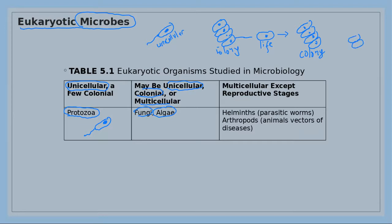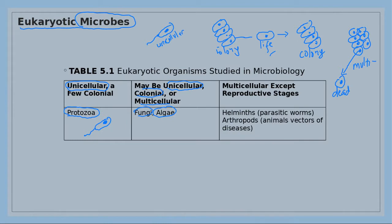Colonial organisms can live by themselves. For multi-cellular organisms — like humans, animals, or plants — they consist of millions of cells. If one cell is taken from a multi-cellular organism, that cell will die. That is the difference between unicellular, colonial, and multi-cellular organisms.